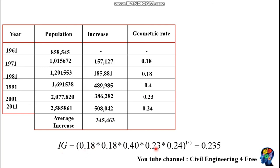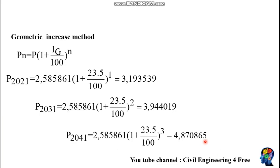Finally, the geometric mean ig is the nth root of the product of all the geometric rate values, giving us 0.235, or 23.5%. Plugging in the geometric mean with n equal to 1 for the first decade, n equal to 2 for the second, and n equal to 3 for the third gives us the future population values.